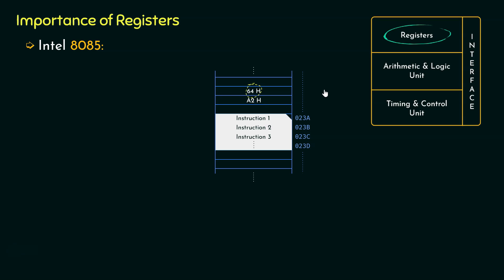What's a nibble in binary? 4 bits comprises a nibble. So 4, that is the least significant digit of hexadecimal, is going to be 0100 in binary. And 6, the most significant digit of hexadecimal, is going to be 0110 in binary. Therefore, 0110 then 0100 — all these 8 bits is a single byte. So in order to store this, we can use the general purpose register B, because B can also store 8 bits.